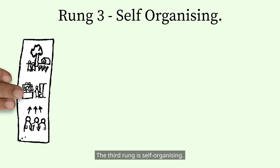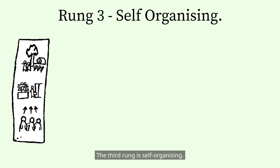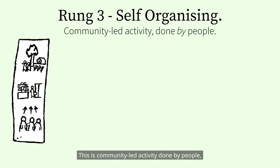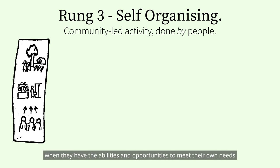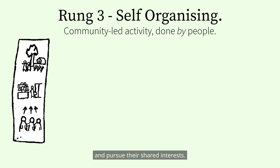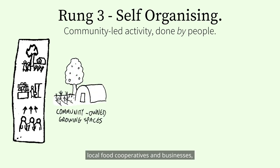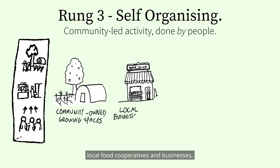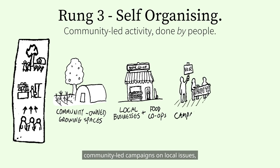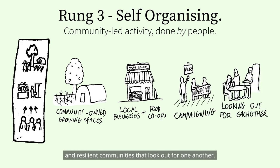The third rung is Self-Organising. This is community-led activity done by people when they have the abilities and opportunities to meet their own needs and pursue their shared interests. Examples might include community-owned growing spaces, local food cooperatives and businesses, community-led campaigns on local issues, and resilient communities that look out for one another.